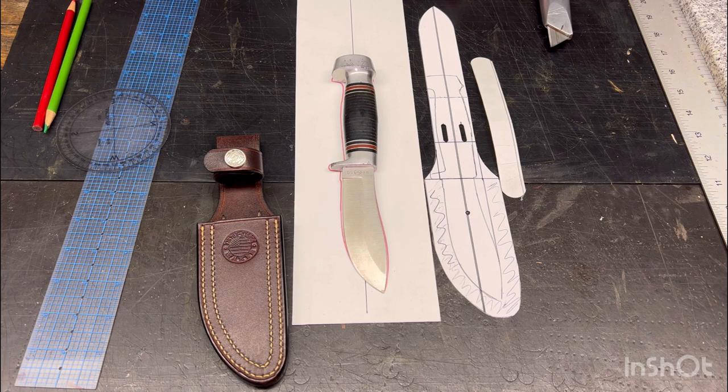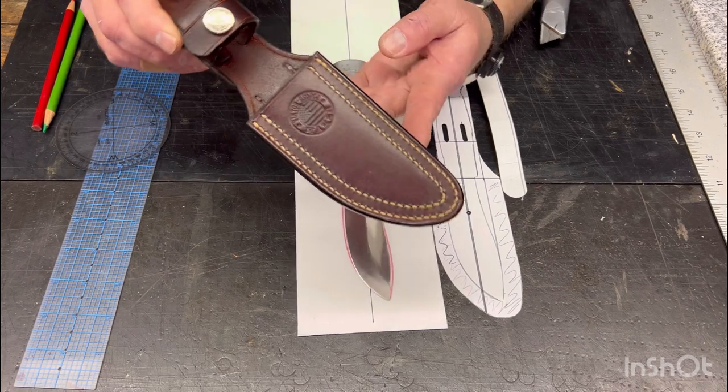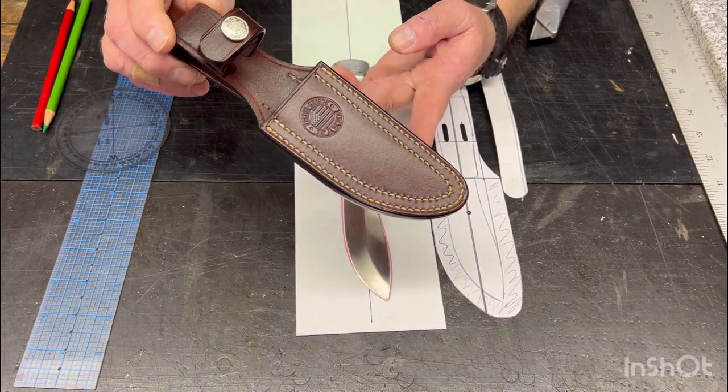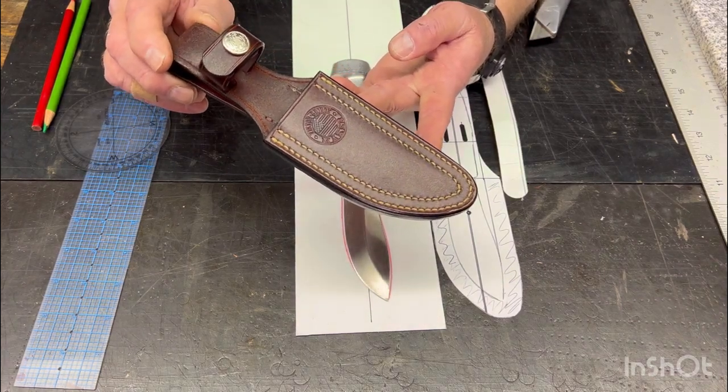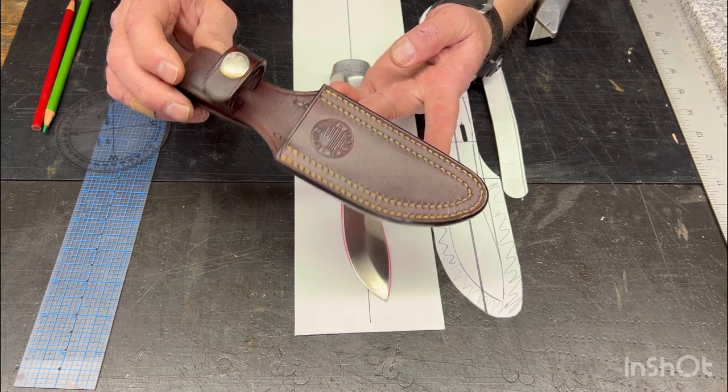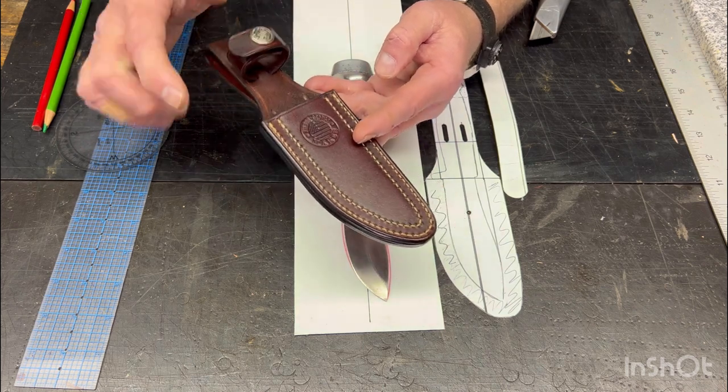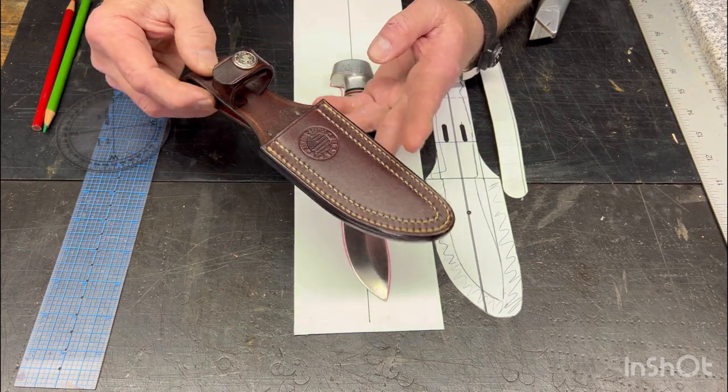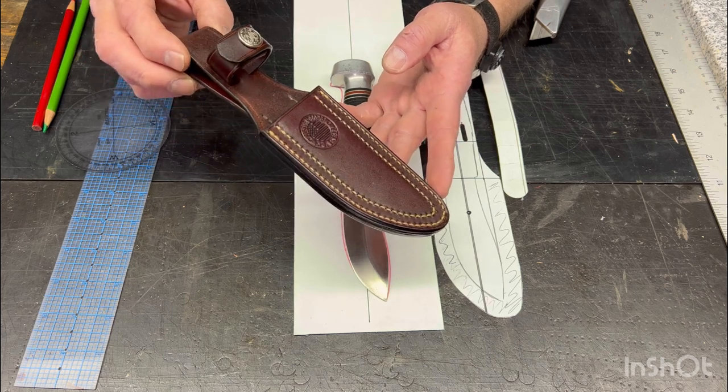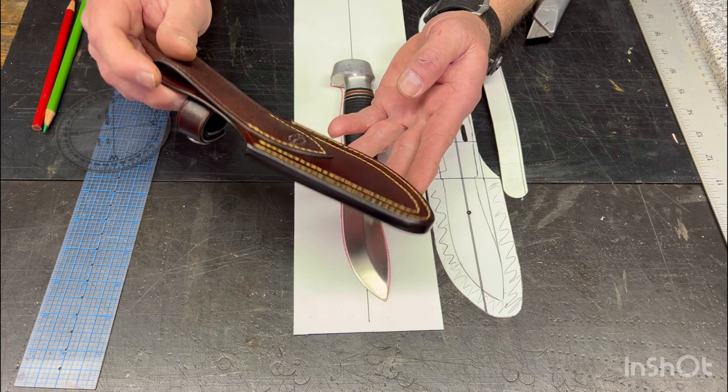Okay before we actually get started on the pattern process let's do a quick little overview of this classic style sheath. So the keeper strap itself first of all is pointed this way on a right hand sheath. I guess the theory of that is that if you're going through brush it won't unsnap. Again it's pretty traditional, pretty standard.